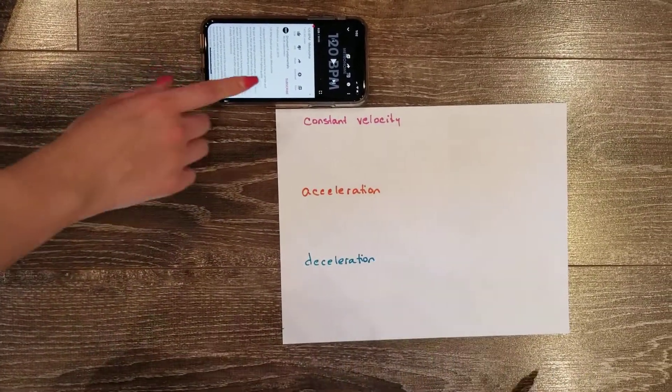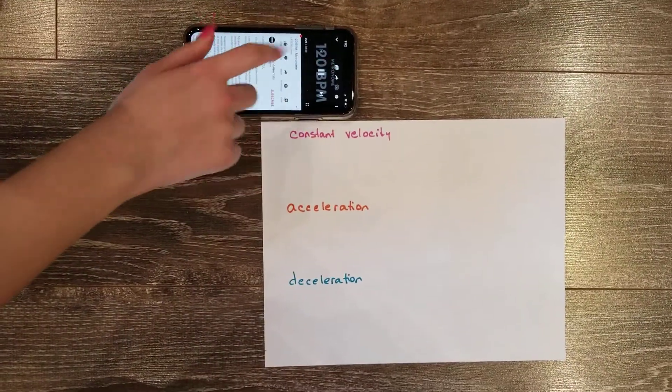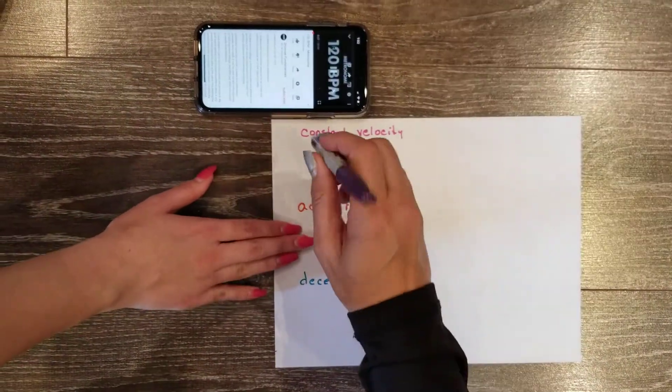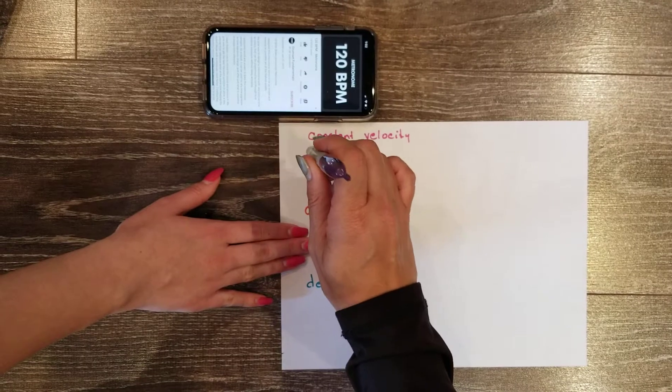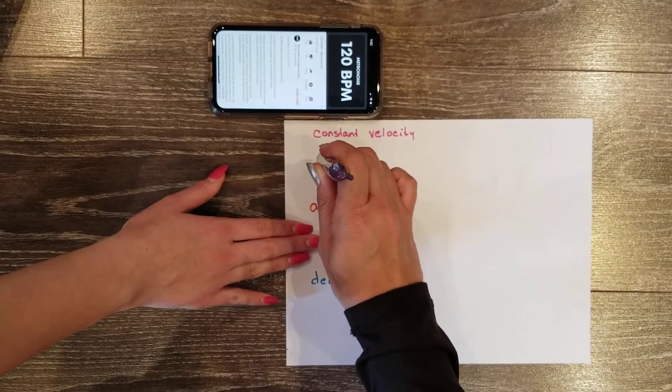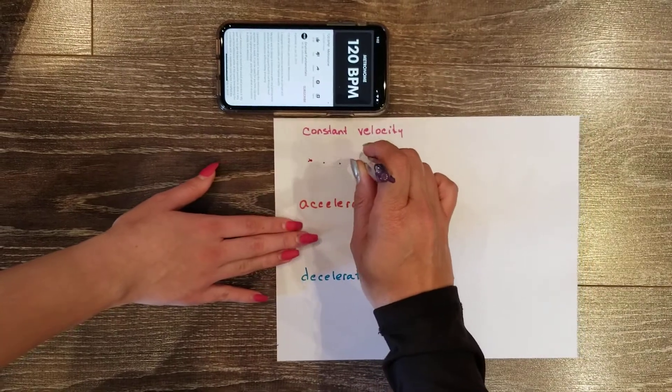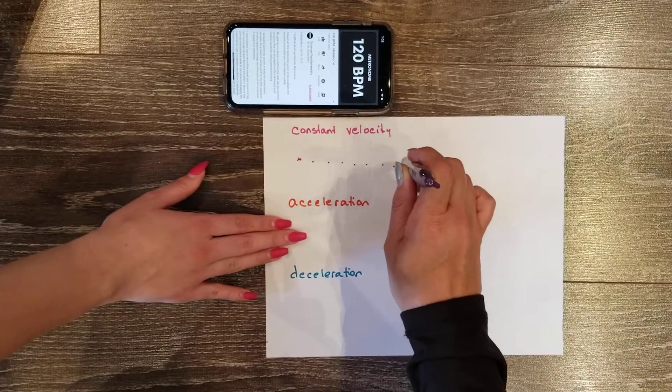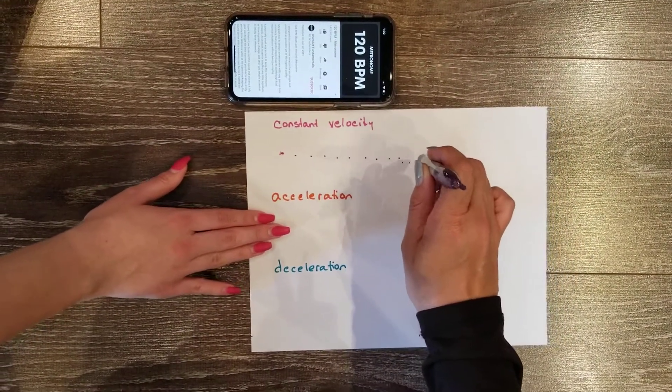So let's start with constant velocity. Start your timer and we're going to start making dots just on the spot. Now once we get going here, our helper is going to pull at constant speed. I'm not going to move my hand, we're just letting them pull the paper at constant speed.